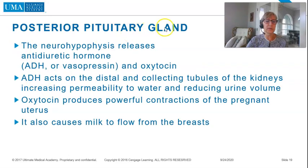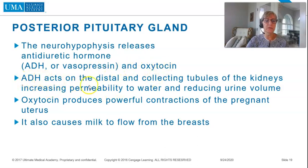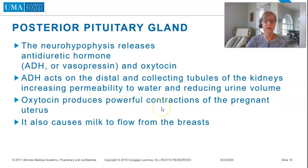Posterior pituitary gland: the neurohypophysis releases antidiuretic hormone, ADH or vasopressin, and oxytocin. ADH acts on the distal and collecting tubules of the kidneys, increasing permeability to water and reducing urine volume. Oxytocin produces powerful contractions of the pregnant uterus and also causes milk to flow from the breasts.